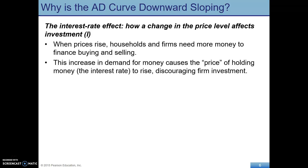Here we're looking at the interest rate effect — this is aggregate demand and investment, how those two are related, and again why the aggregate demand curve slopes downward. This mechanism is a little more involved. As the price level falls, consumers become wealthier — that's what we just saw with the wealth effect — so consumption is going to go up.